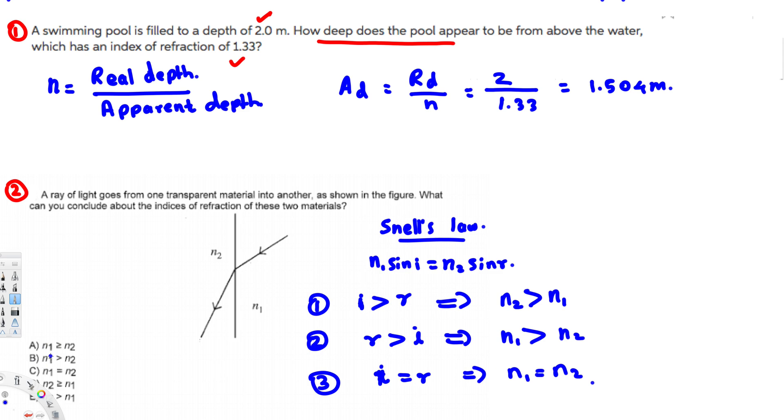Now to solve this problem, we have to know which angle is bigger in this case. To find that, what we do is draw a normal line that is like this, and this is our incident angle.